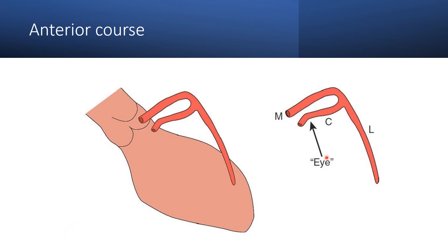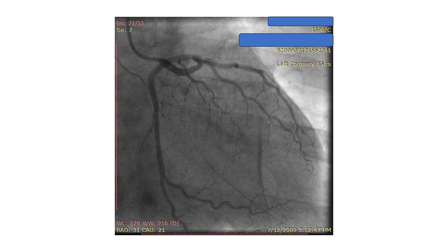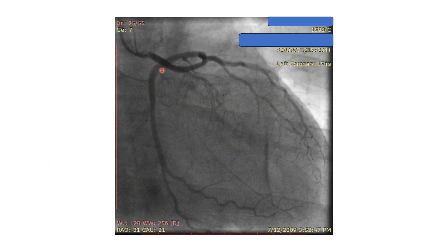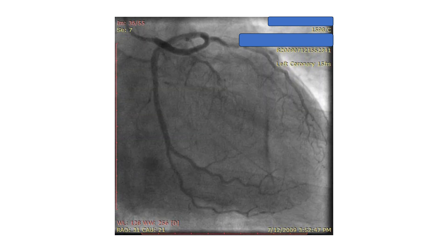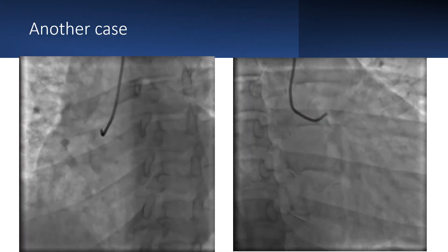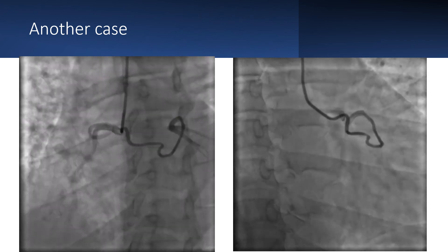In the anterior course, the upper rim of the eye sign is formed by the left main stem and the lower rim by the circumflex. The reverse is seen in the septal course, where the left main stem forms the lower rim and the circumflex forms the upper rim of the eye. In the previous case, it is mostly a septal course because the left main stem forms the lower rim and the circumflex the upper rim. This other case also appears to have a septal course, but CT angiography can confirm.